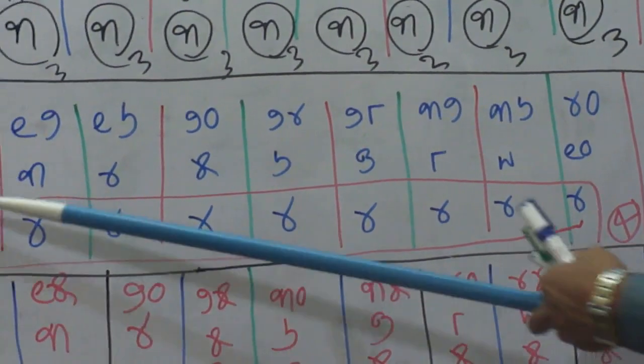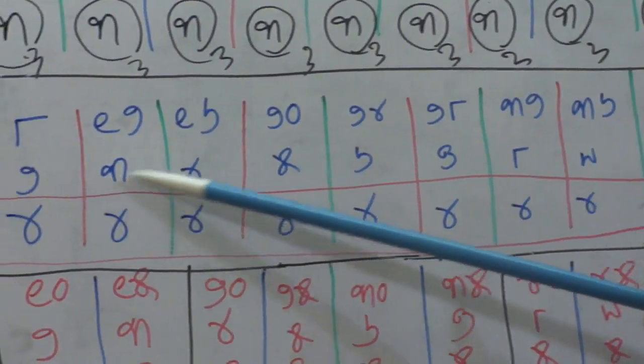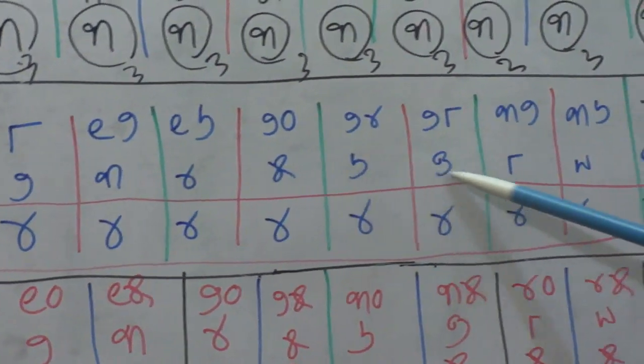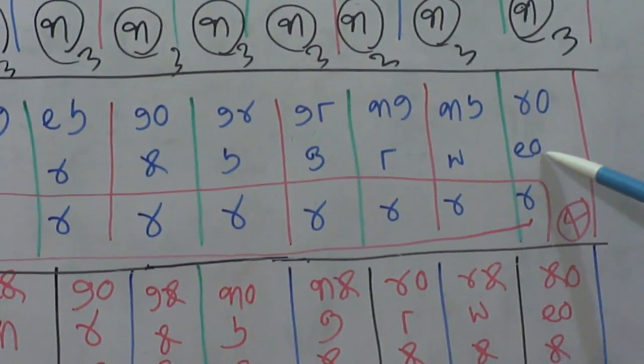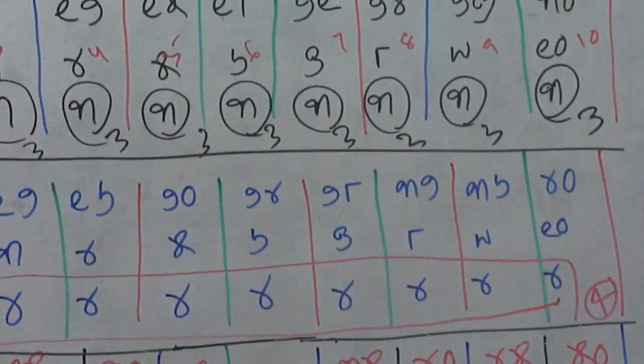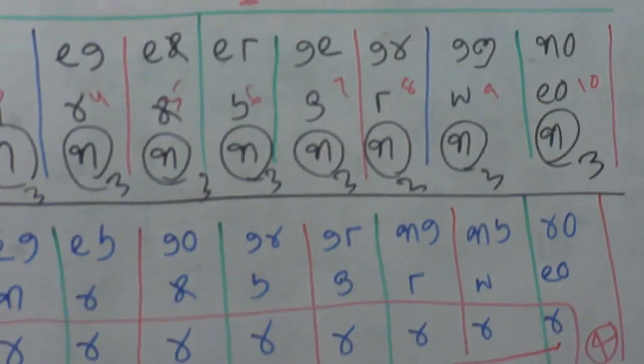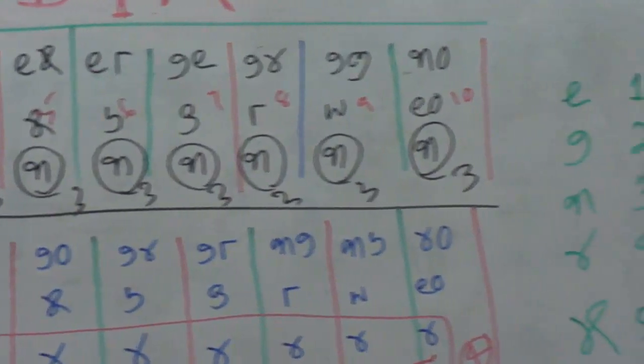Same thing — all these are 1, 2, 3, 4, 5, 6, 7, 8, 9, 10. And if you see this one, you will find that pattern.